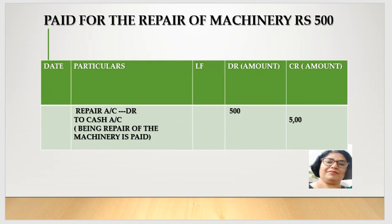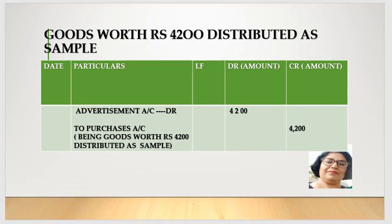After this, paid for the repair of the machinery. Here, repair is an expense account so we debit it, and cash is gone so cash is credited - repair account debit to cash account credit, being repair of machinery. Then: goods worth Rs. 4,200 distributed as a sample. The advertisement is our expense, so we debit advertisement account. Since goods from stock are given as samples, our stock is reduced, so we credit purchases account. Advertisement account debit to purchases account credit - being goods worth Rs. 4,200 distributed as a sample.